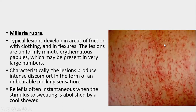Miliaria rubra, or prickly heat: typical lesions develop at sites of friction with clothing. Lesions are uniform, minute erythematous papules which may be present in very large numbers. Characteristically the lesions produce intense discomfort in the form of unbearable pricking sensations, which is the main reason patients present to skin clinics. Relief is often instantaneous when the stimulus to sweating is stopped by removing patients from the hot environment and by cold showers.